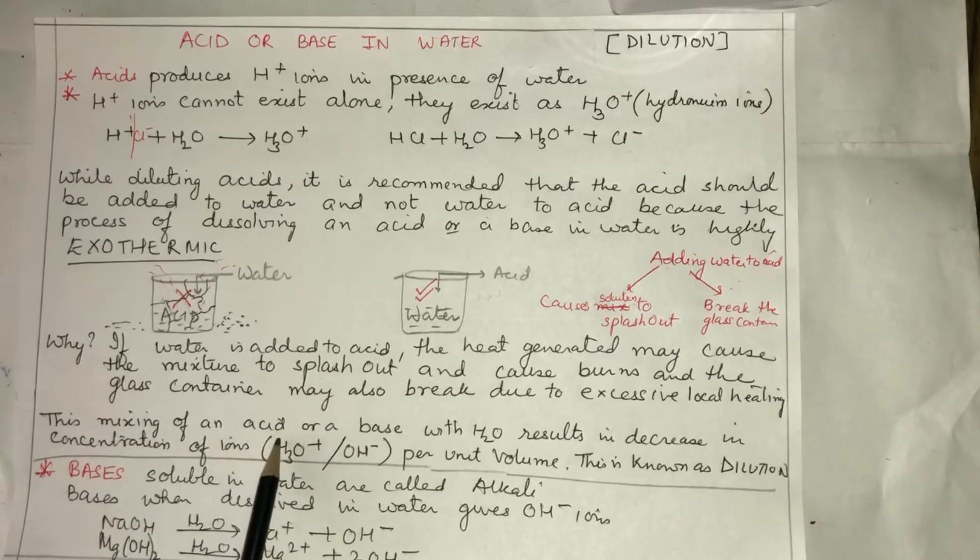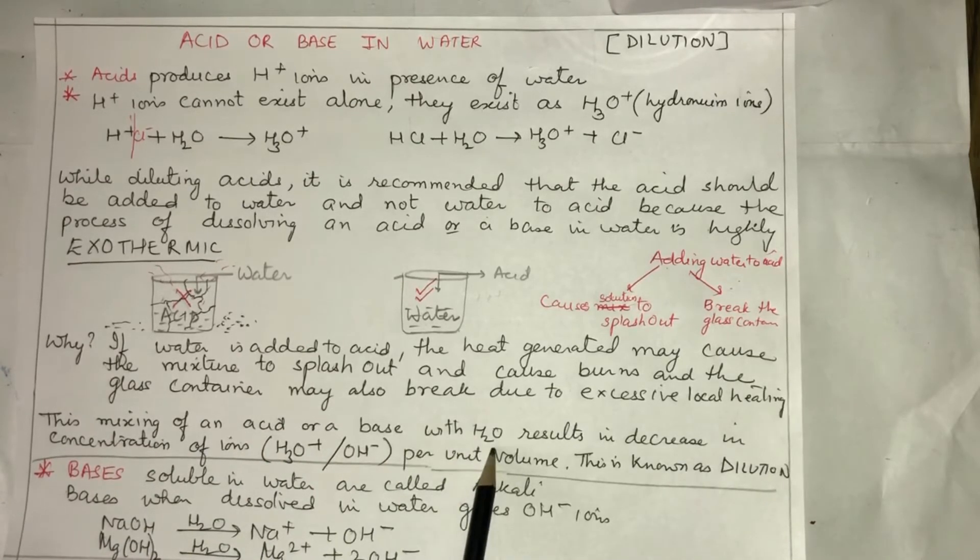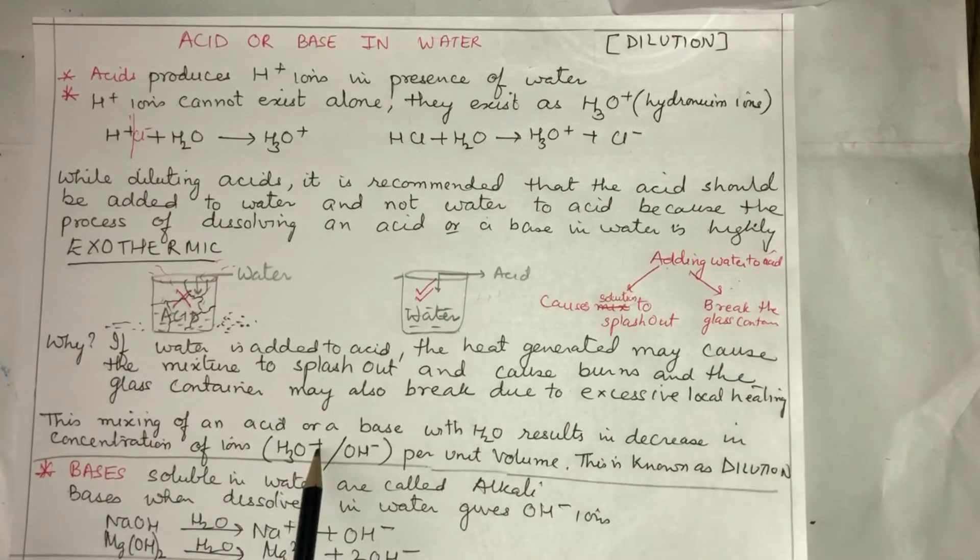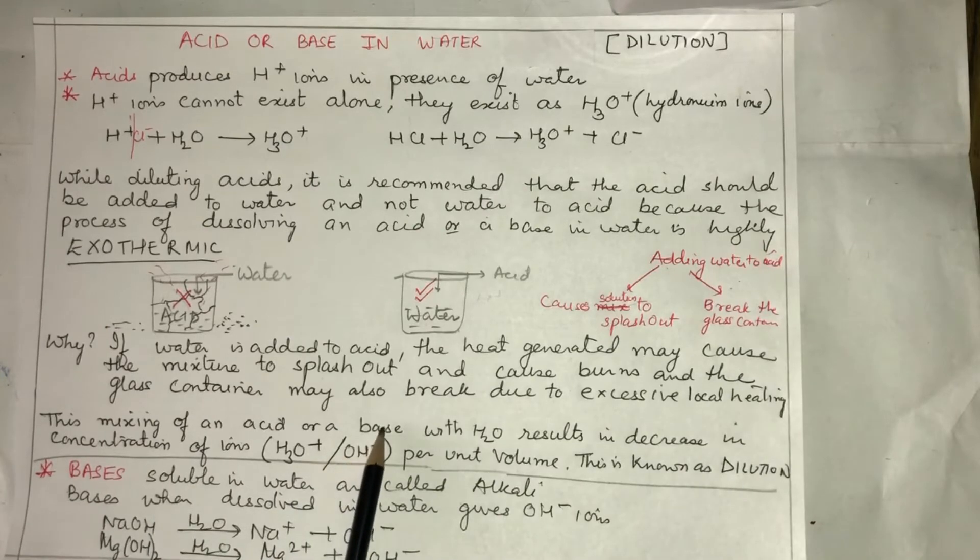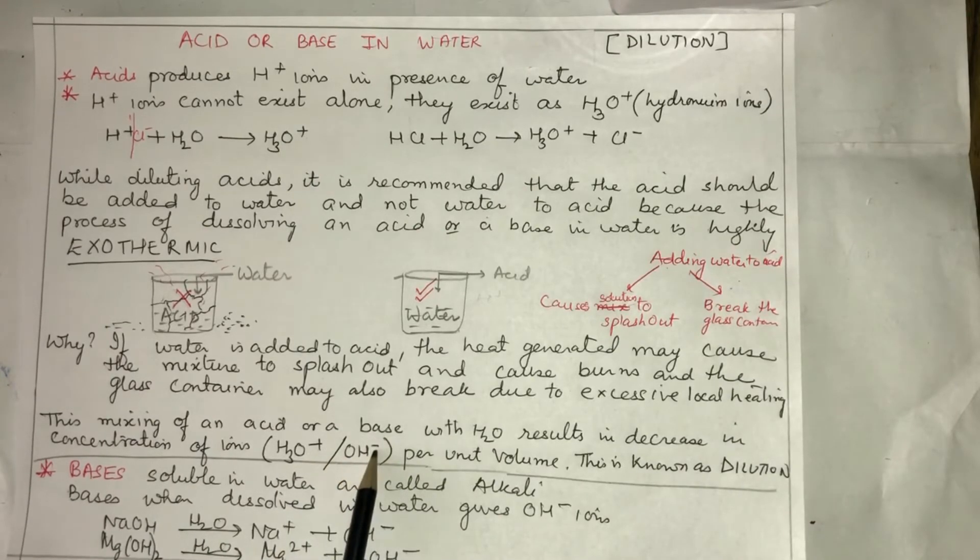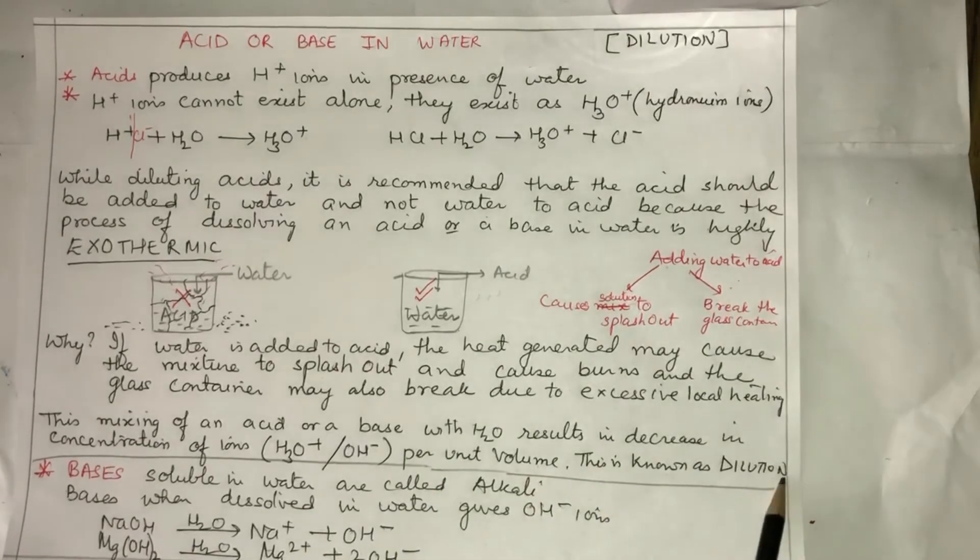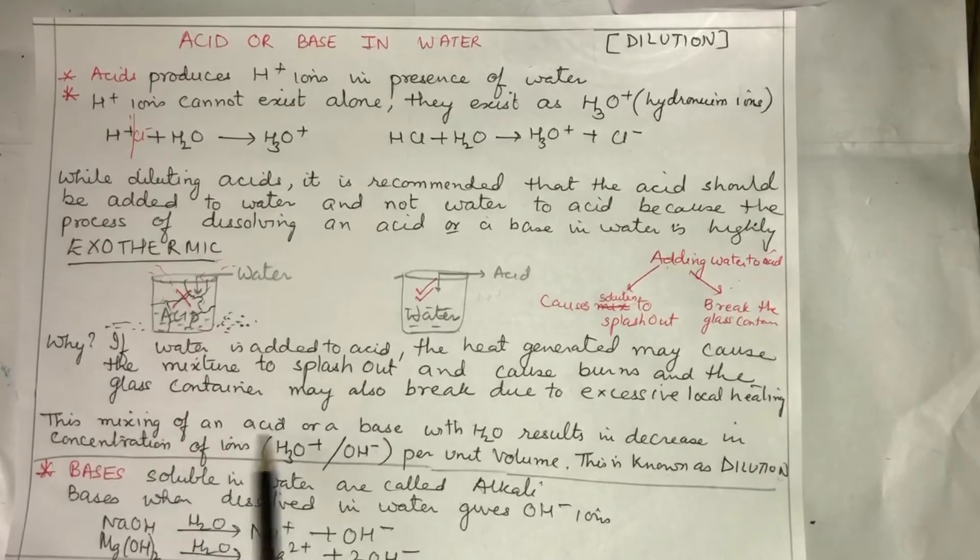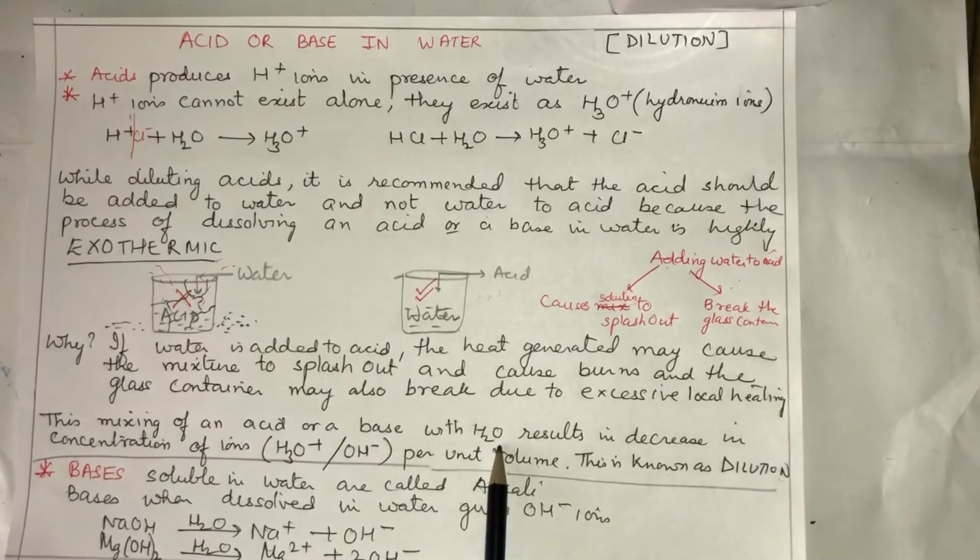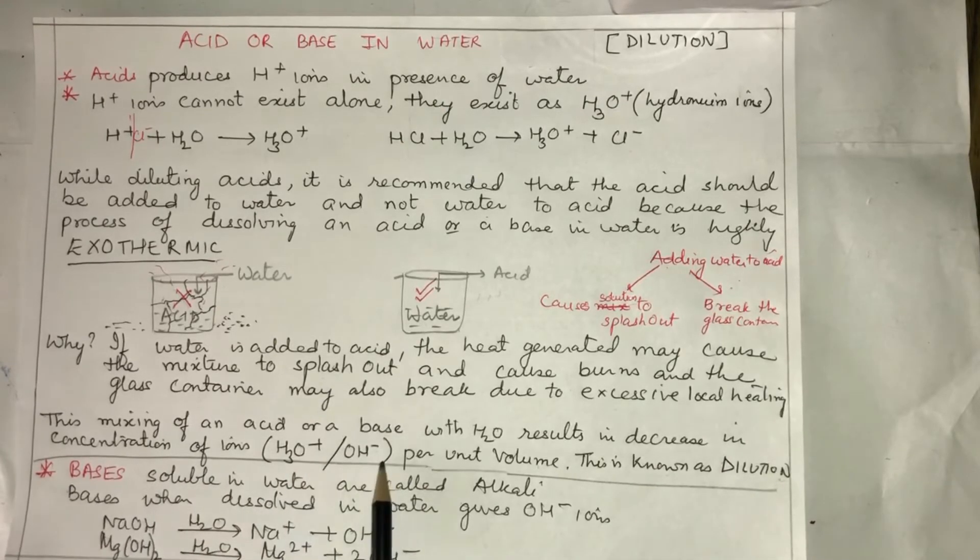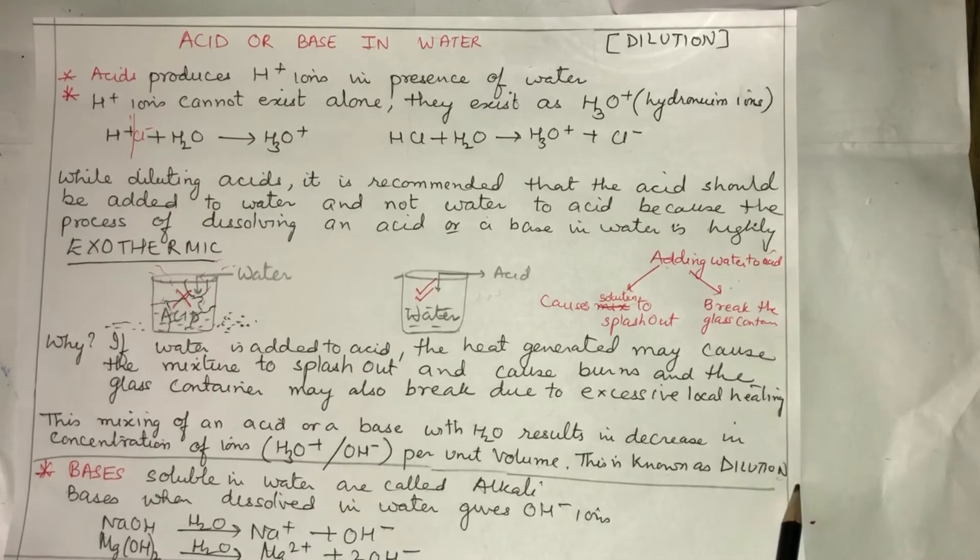The process of mixing an acid or base with water which results in decrease in concentration of ions - agar acid hai toh H3O+ ion ka concentration, aur base hai toh OH- ka concentration per unit volume - is known as dilution.